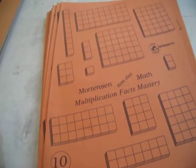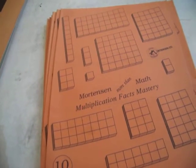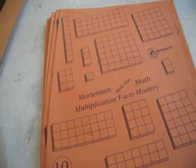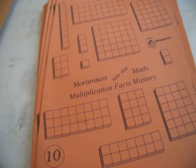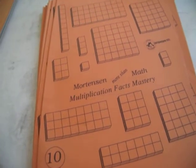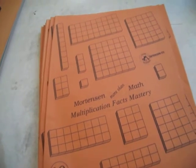But the idea being is that the way we do mathematics is with computation. Mathematics is not solely computation, but if you're going to do computation, you need to be able to count, and if you're going to count fast, multiplication is how you do that. Multiplication facts mastery books.